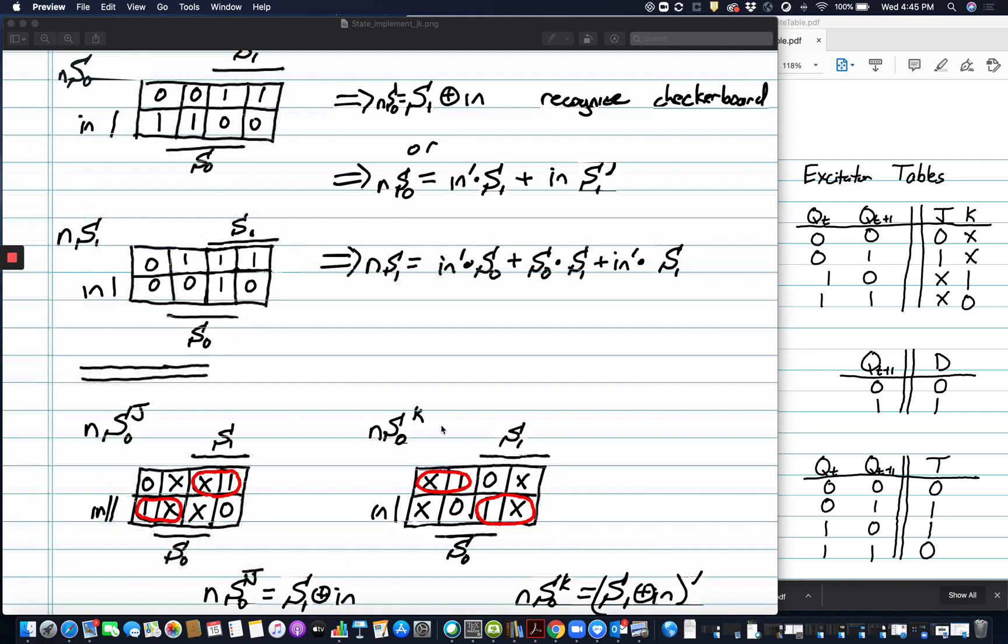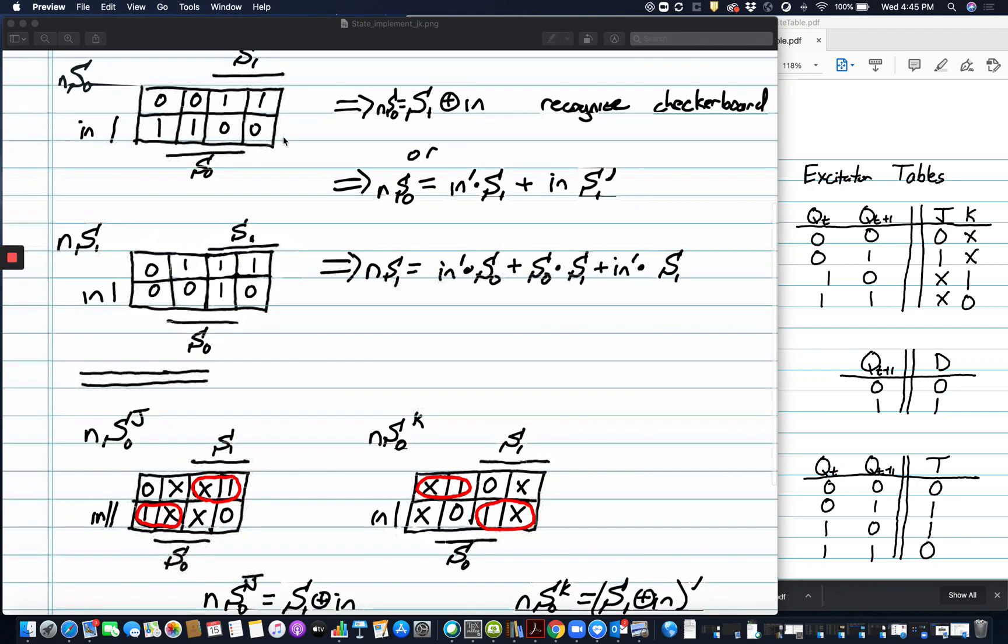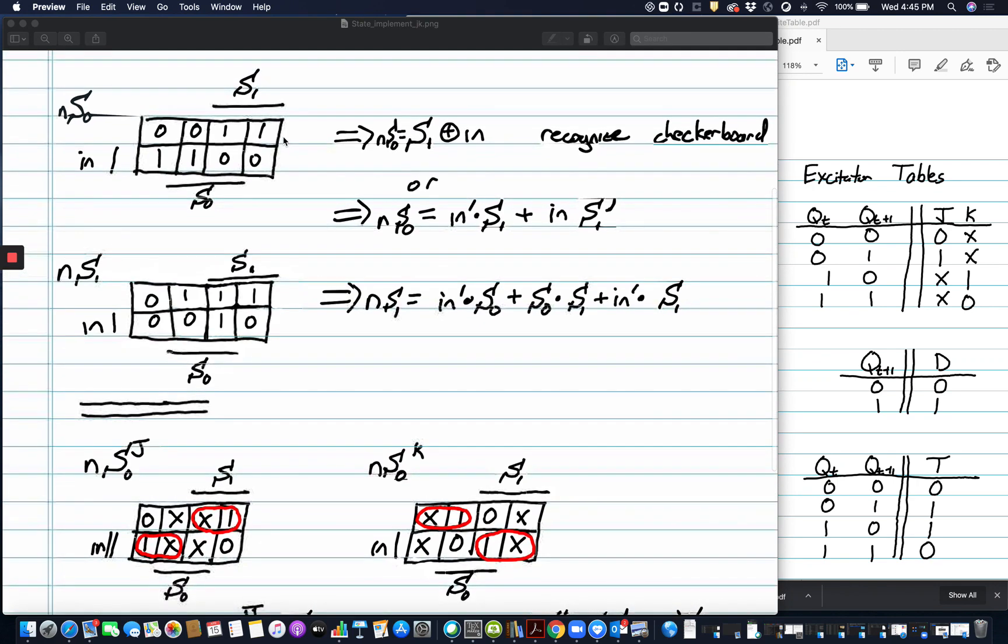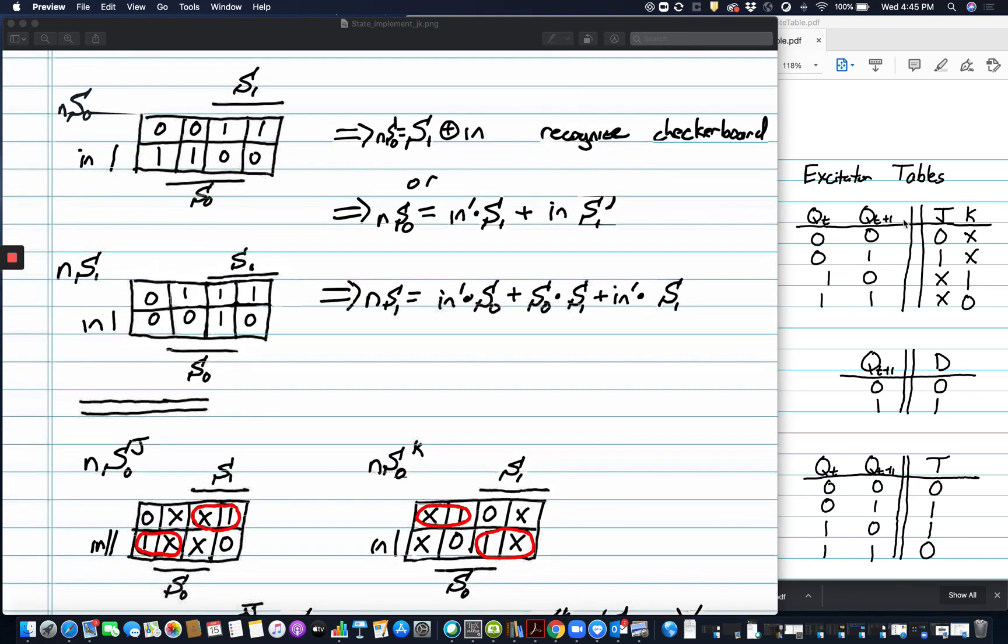Now, the easiest way to fill out the JKs is actually to start from these tables, the D tables. You can do it directly, also, but there's a lot of shortcuts when it's already in this format.